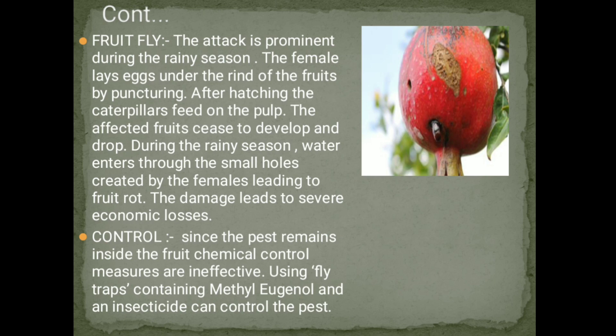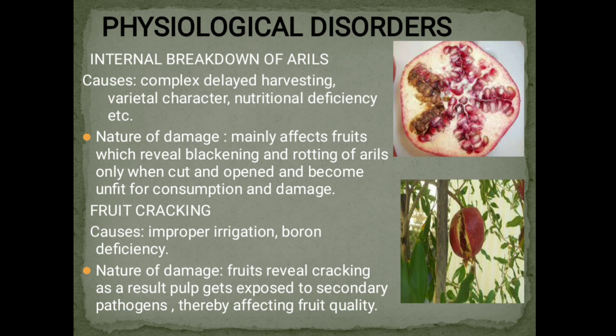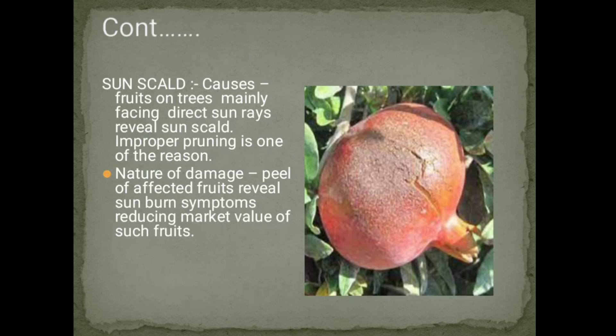Physiological Disorders. Internal Breakdown of Arils: caused by complex delayed harvesting, varietal character, and nutritional deficiencies; mainly affects fruit, revealing blackening and rotting of arils when cut; makes fruit unfit for consumption. Fruit Cracking: caused by improper irrigation and boron deficiency; fruits reveal cracking, exposing pulp to secondary pathogens, thereby affecting fruit quality. Sunscald: fruits on trees facing direct sun rays reveal sunscald; improper pruning is also a reason; peel of affected fruits shows sunburn symptoms, reducing market value.